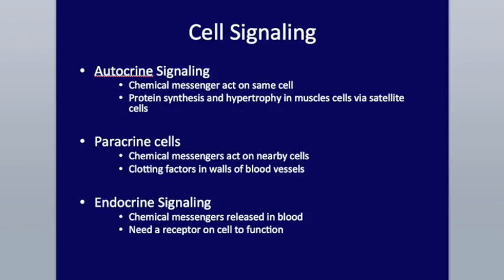Endocrine signaling is one you hear about quite a bit — your endocrine system. These are chemical messengers released into the blood, flowing throughout the circulatory system. The main difference from all the other types is that there needs to be a receptor on a cell for that endocrine chemical to actually function. A good example is insulin: if a cell does not have an insulin receptor, insulin cannot act on that cell. We'll probably talk about this more when we get into exercise and special populations, particularly when we discuss diabetes.